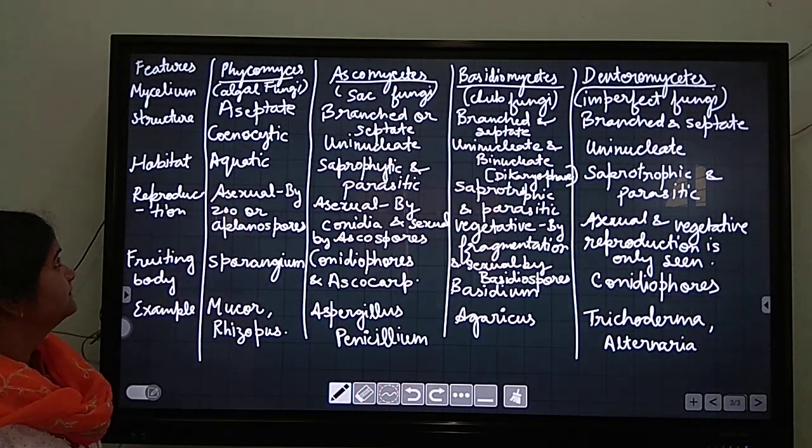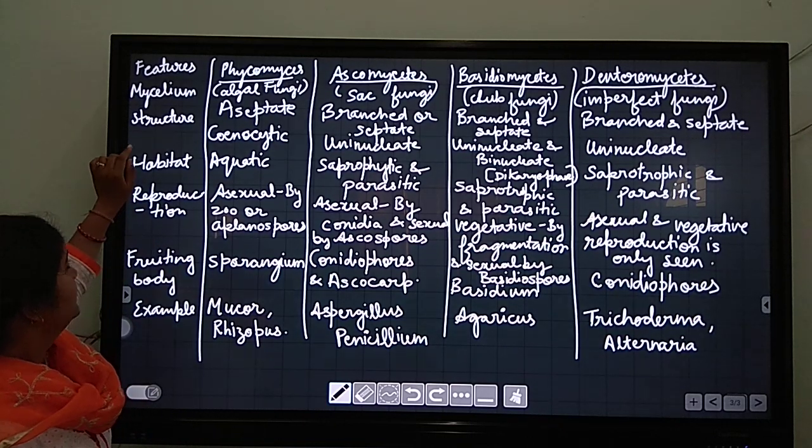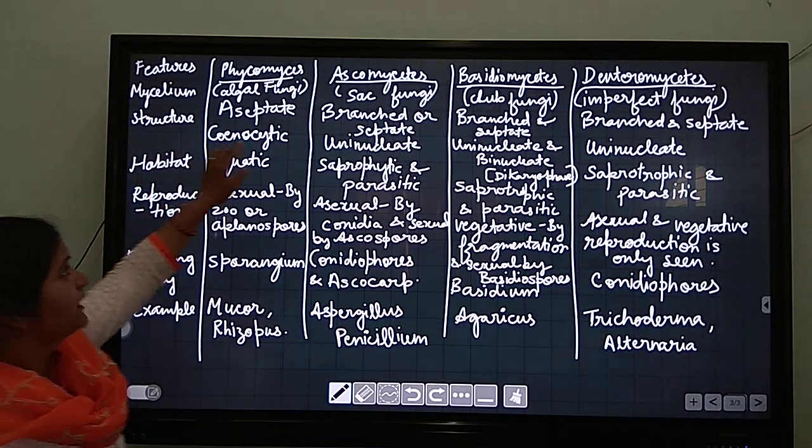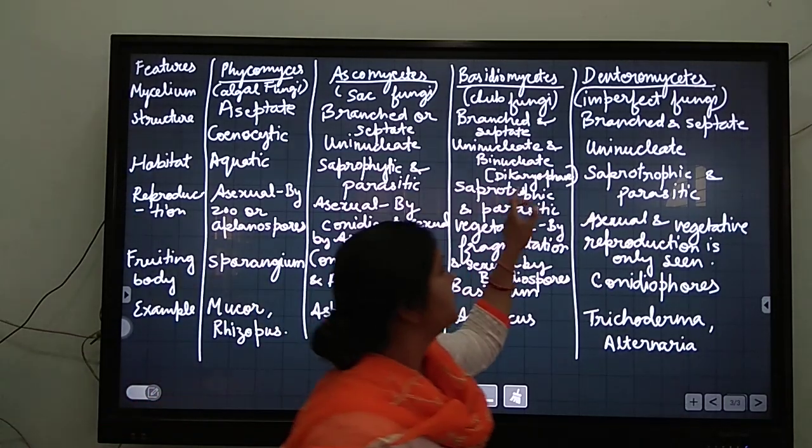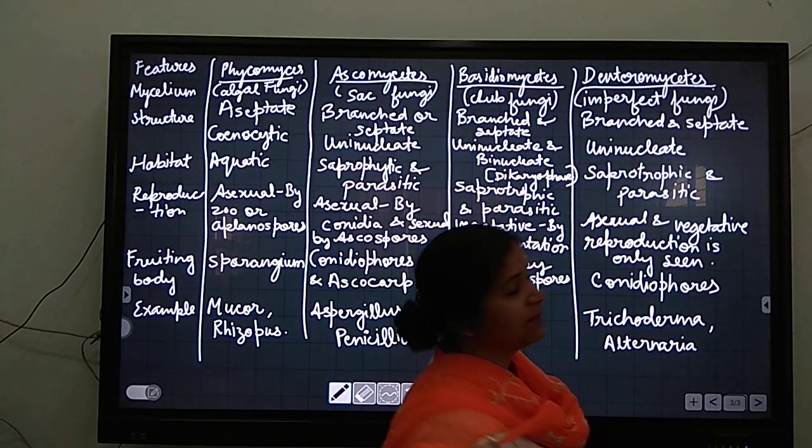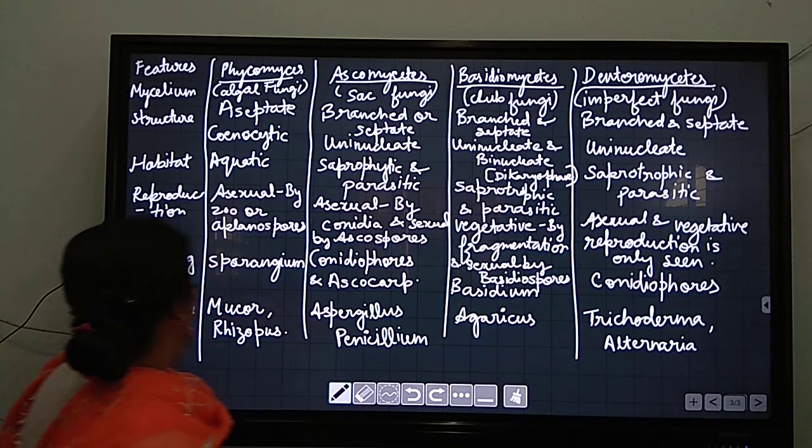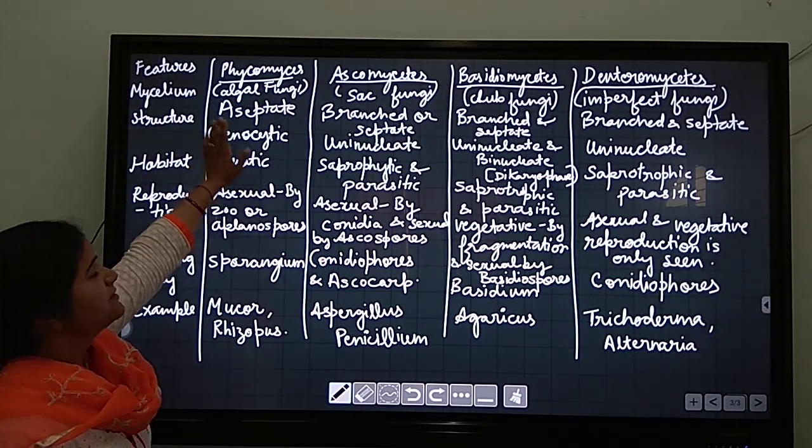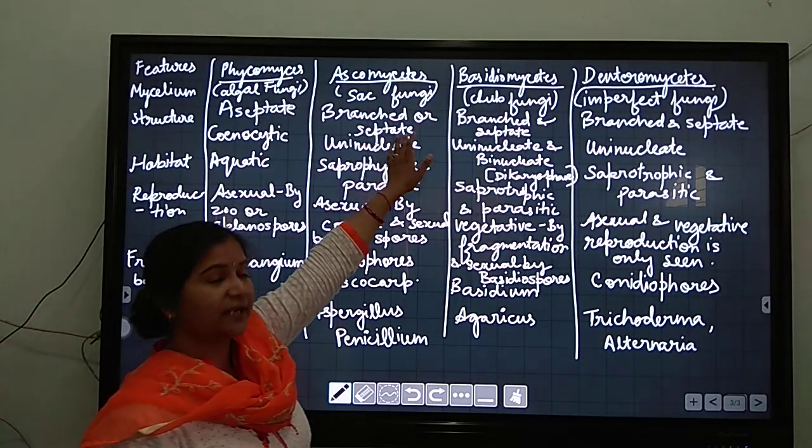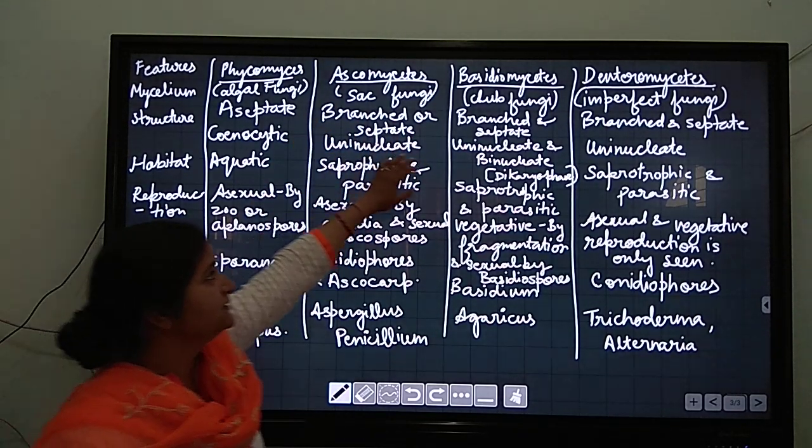Phycomycetes is algal fungi. Ascomycetes is sac fungi. Basidiomycetes is club fungi, and deuteromycetes is imperfect fungi. This is the common name. Mycelium structure: aseptate coenocytic mycelium is there in phycomycetes. Branched septate mycelium is there in ascomycetes. Branched septate in basidiomycetes and deuteromycetes.